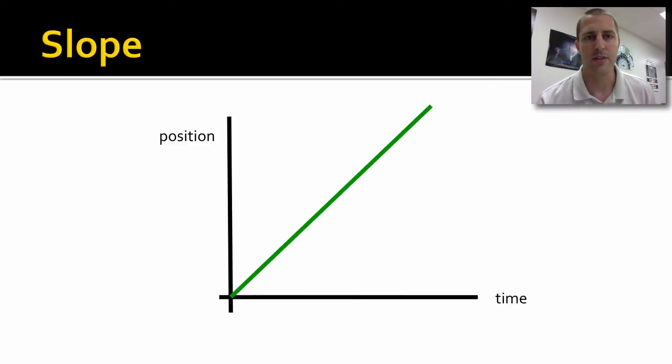Finding the slope of a straight line is really easy. We know on a position-time graph the slope is velocity. That's useful.